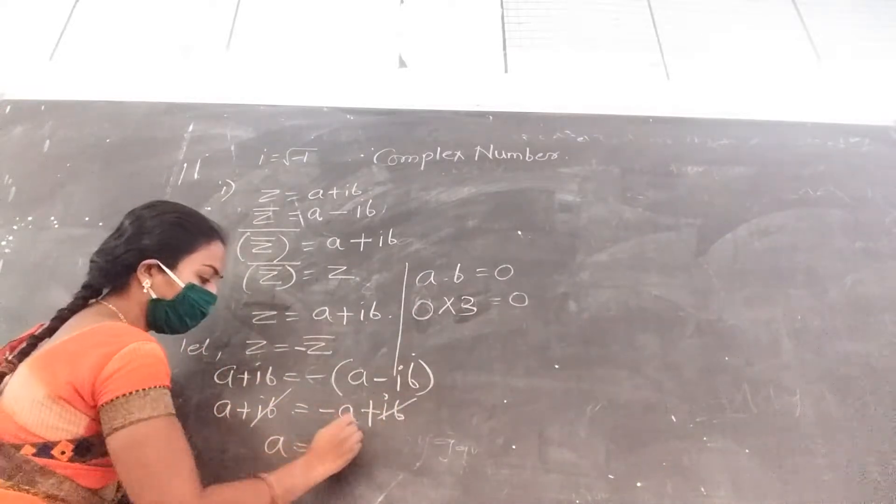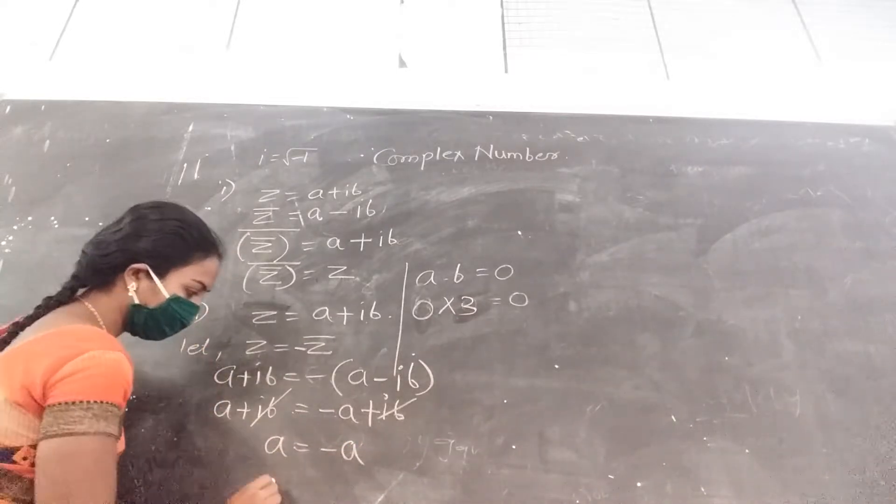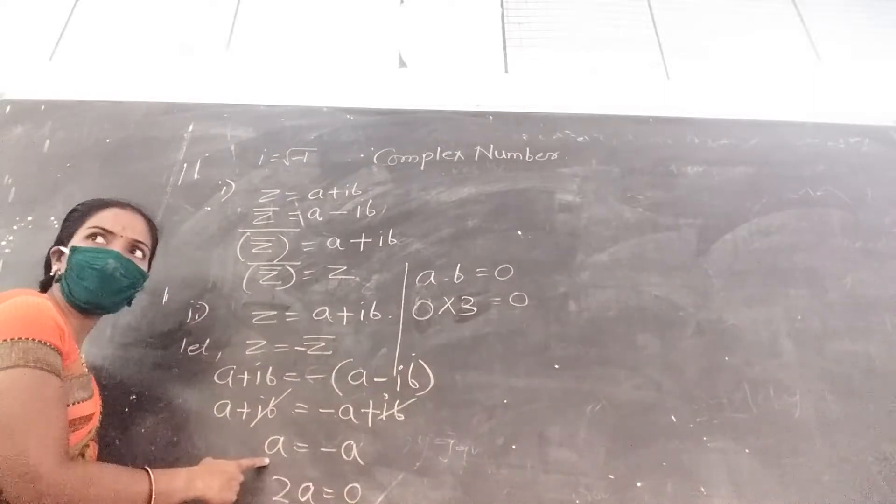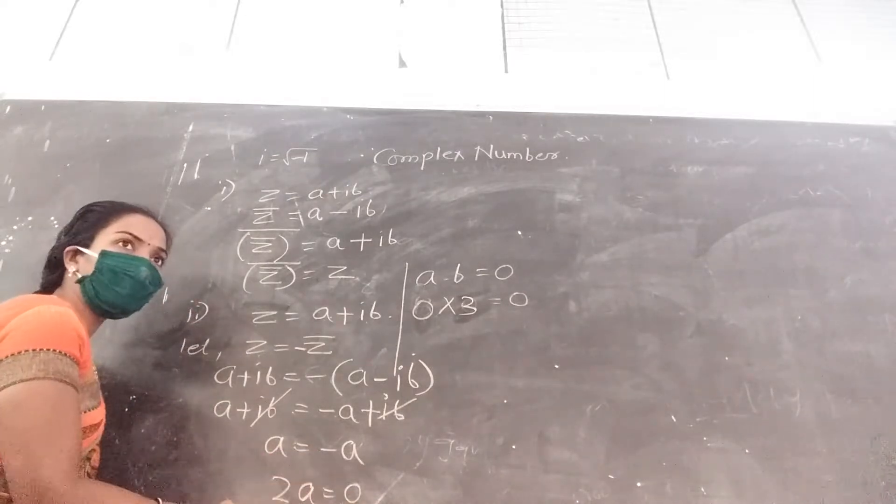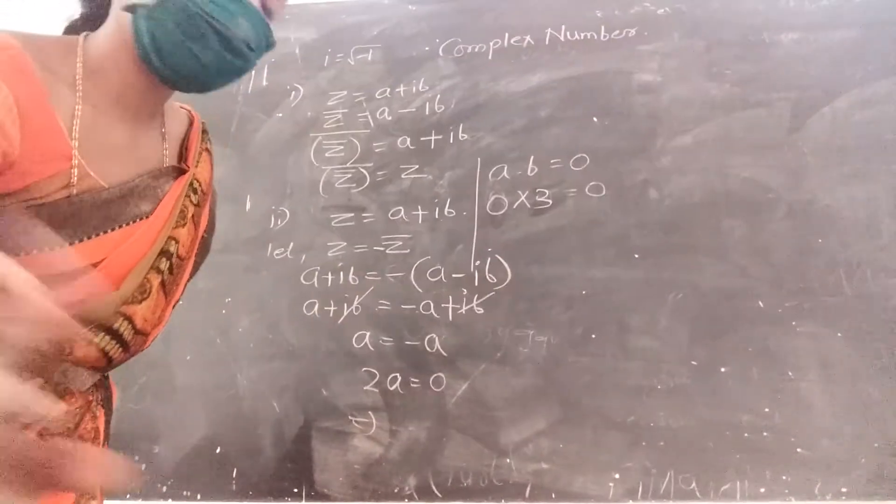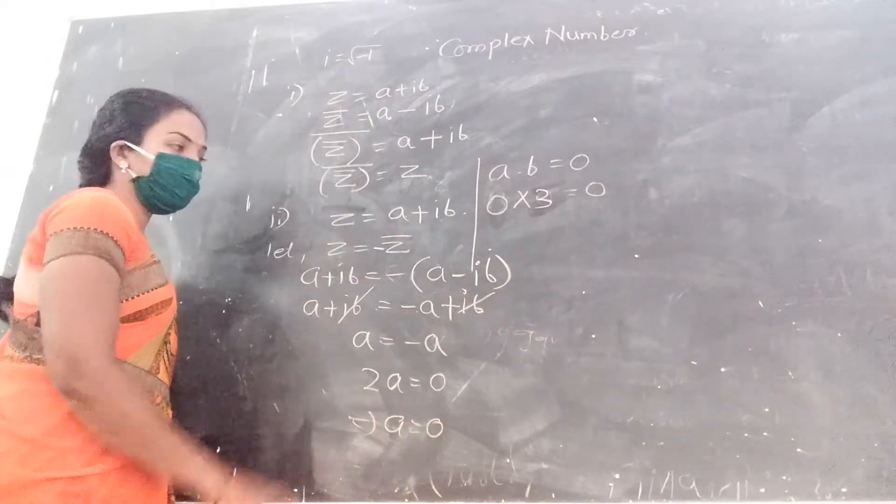Okay, if a is there, equal to minus a. A minus a means two a equal to zero. If a is minus a, or plus a, a plus a becomes two a, which is zero. Two is not zero, then what it implies? A equal to zero, a equal to zero.